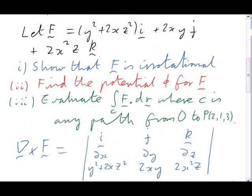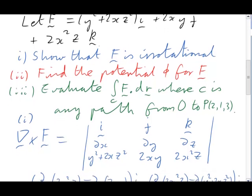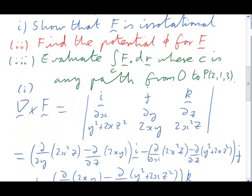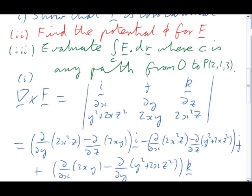If F is to be irrotational, Part 1, that means its curl must be 0. Here's the curl expressed in the usual way using the determinant. We have to expand the determinant, unfortunately.